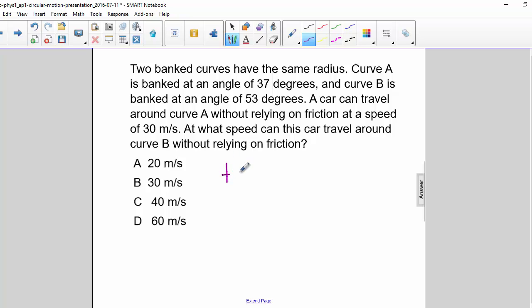We know from previous problems that tan theta equals V squared over GR. We can also say GR equals V squared over tan theta.